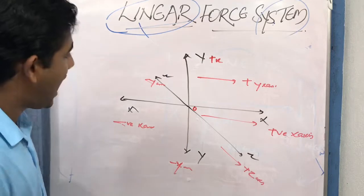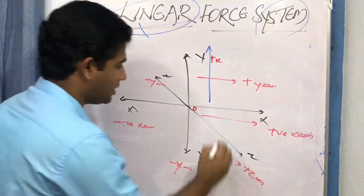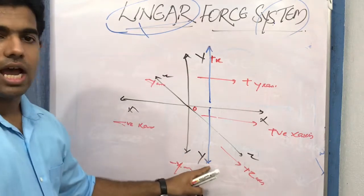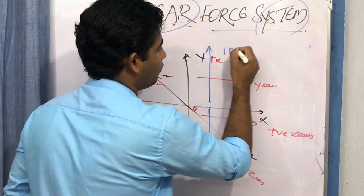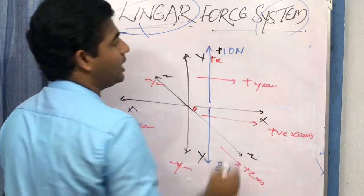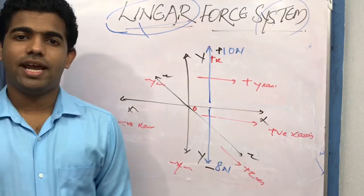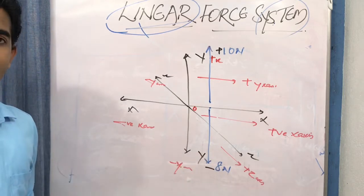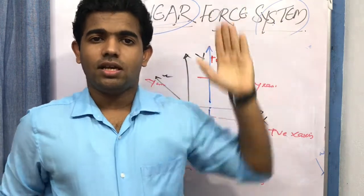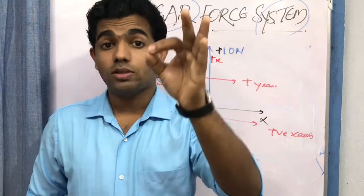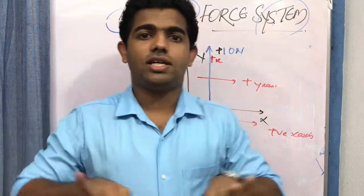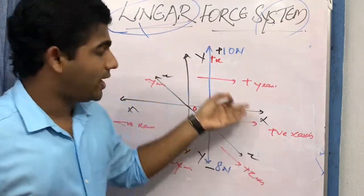For example, if the first force is acting upward and the second force is acting downward at the same point of contact — say 10 Newton upward and 8 Newton downward — the upward force is positive 10 Newton and the downward force is negative 8 Newton, because downward is along the negative y-axis. Forces acting upward, to the right, or forward are positive; forces acting downward, backward, or to the left are negative.